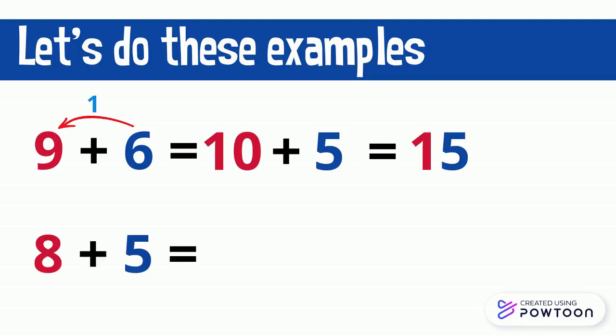What is 8 plus 5 equal to? 5 will give the number 8 2. 8 becomes 10 and 5 becomes 3. So, 8 plus 5 equals 10 plus 3 equals 13.